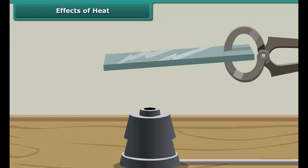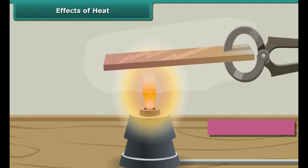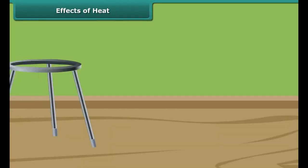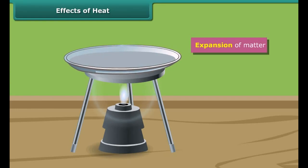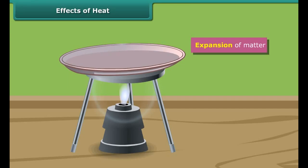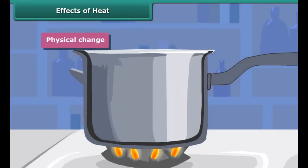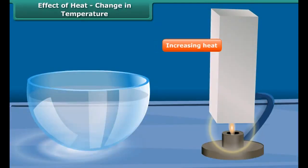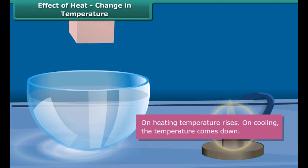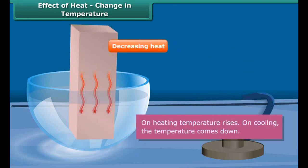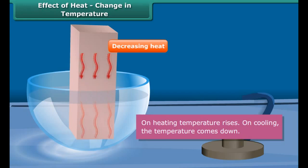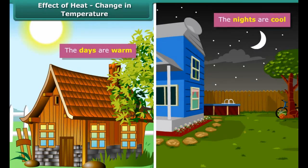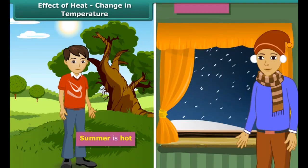You will also be able to explain good and bad conductors of heat. When an object is heated, it undergoes many changes. The object becomes hotter. The object may expand or contract in size. A substance may change its state when heated. For example, water changes into water vapor on heating. We observe a change in temperature on heating. Temperature rises on heating and comes down on cooling. In nature, the sun's energy brings about a change in temperature. The days are warm while the nights are cool; summer is hot, winter is cold.